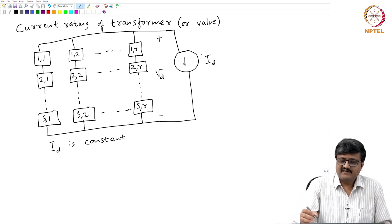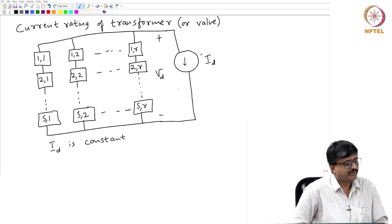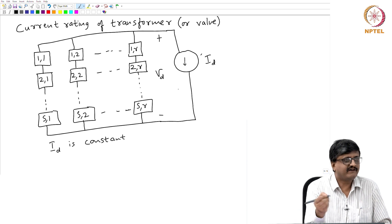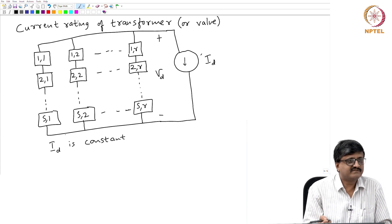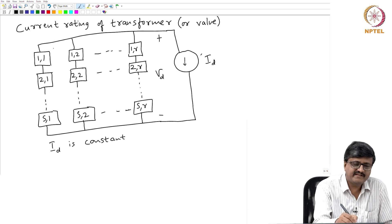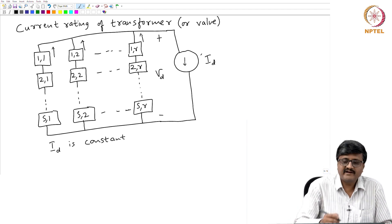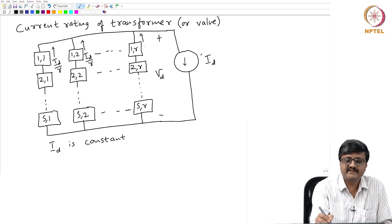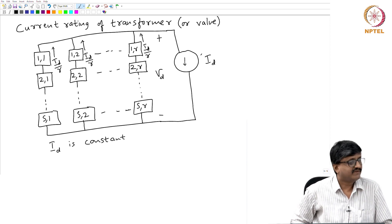With this assumption of a constant current on the DC side, to find the current rating of the transformer, I look at the current in the individual parallel paths. For any parallel path, by symmetry all the currents are equal — the current is id/r.